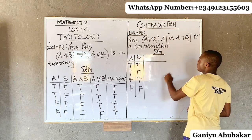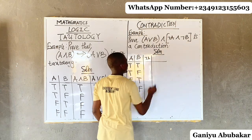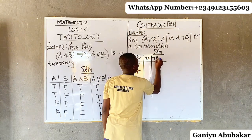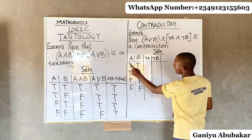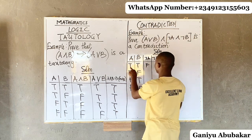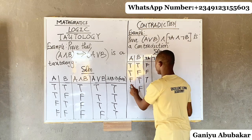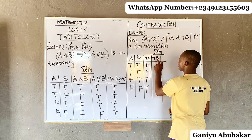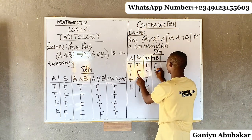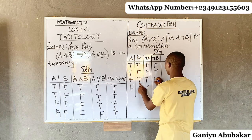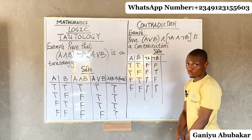Let's get negation of A and negation of B. For negation, you simply flip the value to the opposite. For A: true becomes false, true becomes false, false becomes true, false becomes true. For B similarly: true becomes false, false becomes true, true becomes false, false becomes true. That's how negation works.